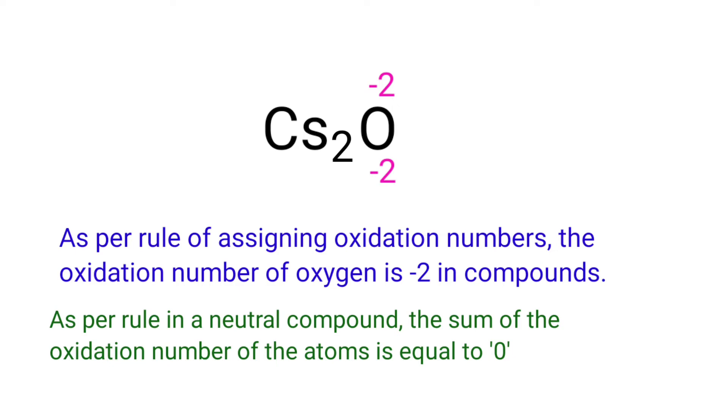As per rule in a neutral compound, the sum of the oxidation number of the atoms is equal to 0. So the numbers along the bottom must add up to 0. So the number under Cs2 must be +2.